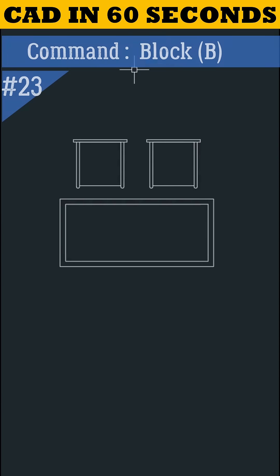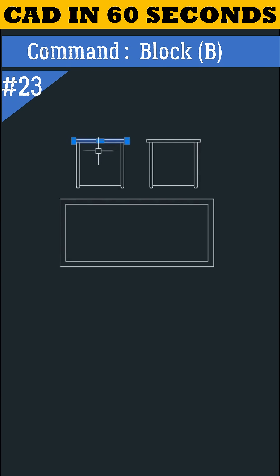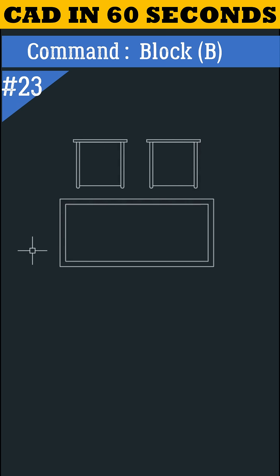Let's learn the block command. This command is used to convert multiple objects into a single object. We can see here all these objects are separate. Let's convert them to a single object.